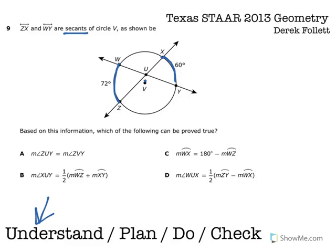Okay, so let's just read through these answer choices and see if we can eliminate any of them. So I understand I'm trying to find what's true with those secants and those arc lengths. My plan is to read the answer choices and see if I can eliminate some of them.